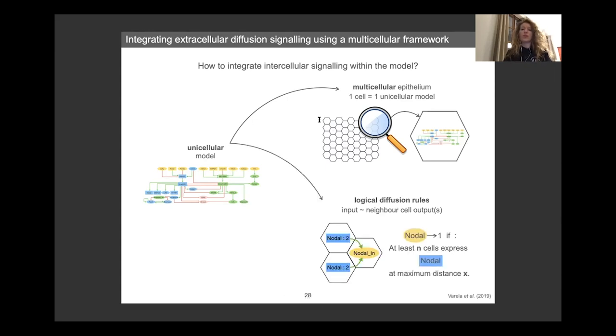And in addition, we add the extra layer of regulatory rules that govern the diffusion in between the different cells of this epithelium. And these rules actually define the inputs that were previously fixed along the simulation. In the case of multicellular epithelium, the input value will be changed across the simulation based on the expression of the output values of the surrounding cells.